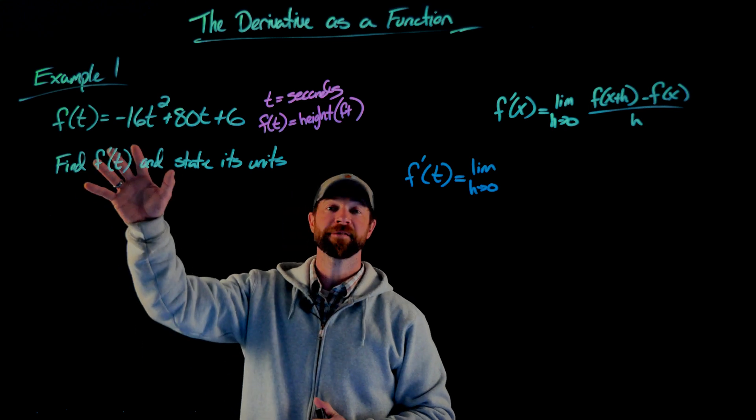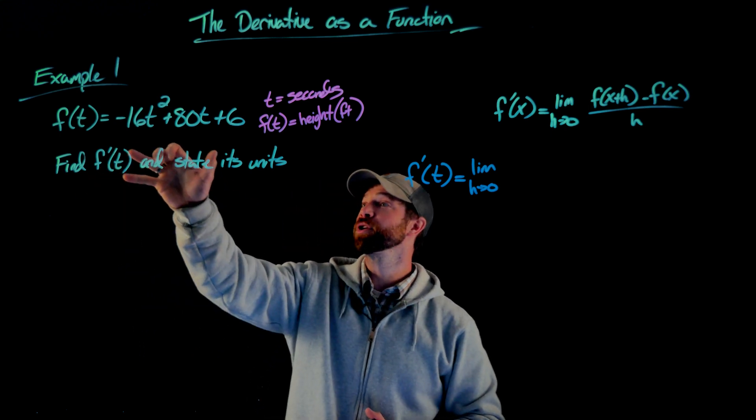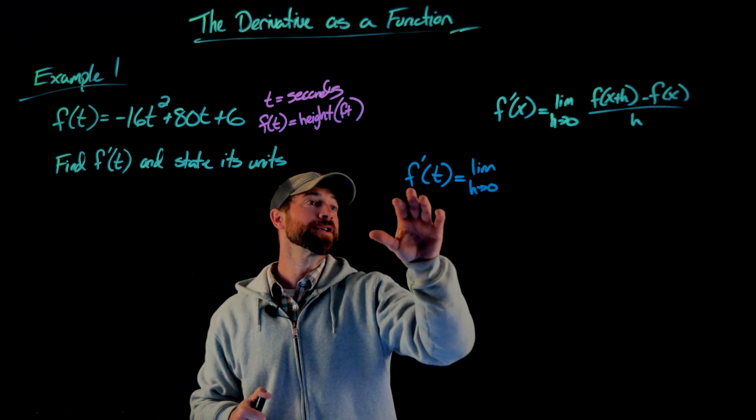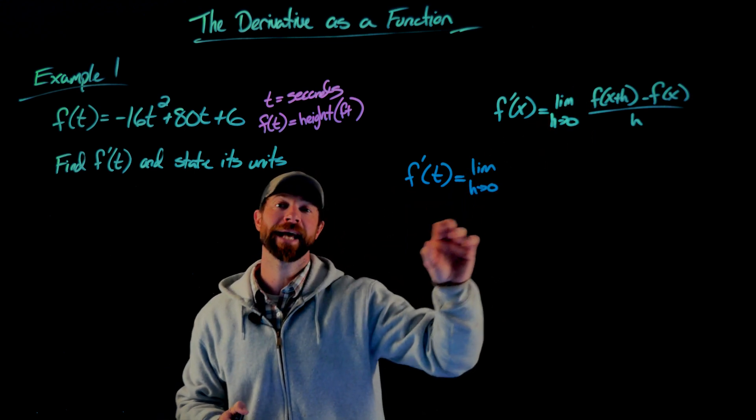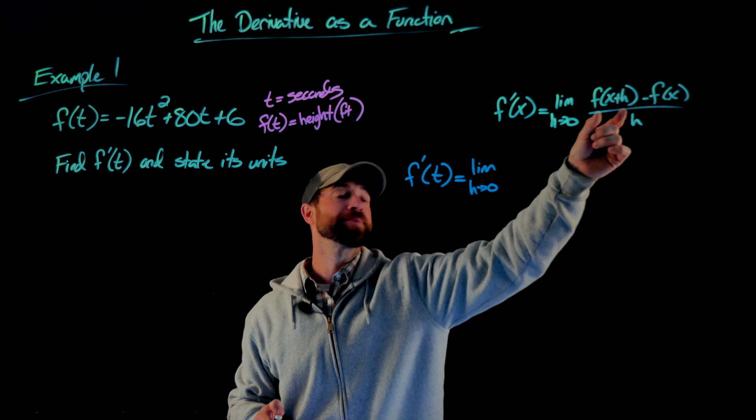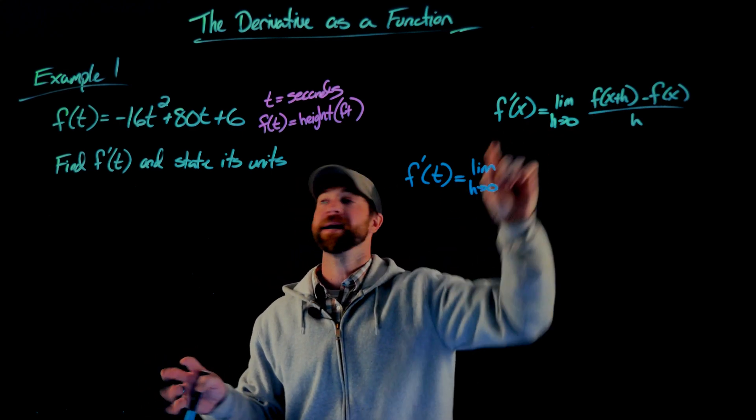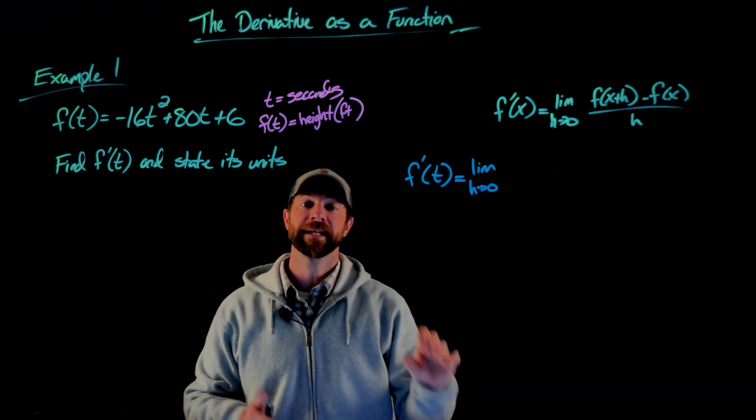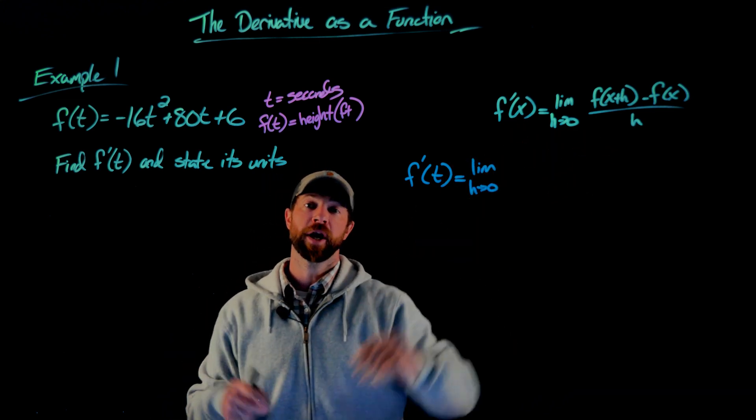All right, to find the derivative of this function right here, all I need to do is plug in this function right here into this formula. So the first derivative is the limit as h goes to zero of f of x plus h, in this case it's going to be t plus h because my independent variable here is t, minus f of t.